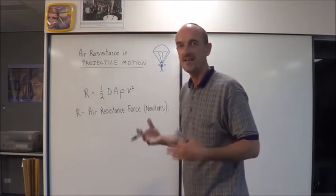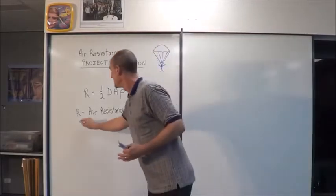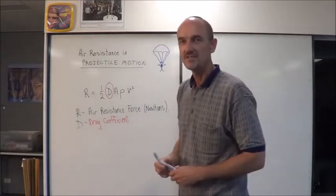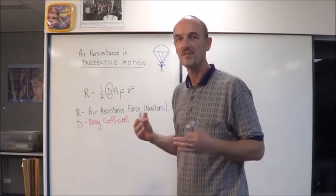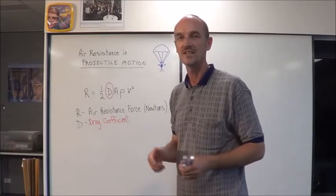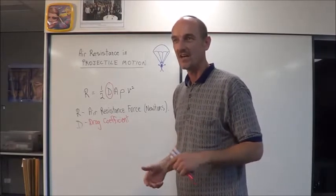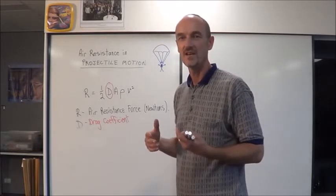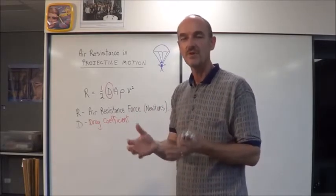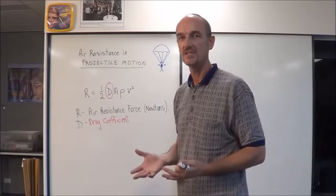Now what does air resistance actually depend on? Well, the first thing is this factor D, the drag coefficient. The drag coefficient is determined by the shape, size, and nature of the surface of the object. For example, if you took a soccer ball and covered it in carpet, you would find that its travel through the air would be affected significantly by the surface. Even though the size, shape, and mass of the ball are very similar, because of the surface you change the amount of air resistance experienced.